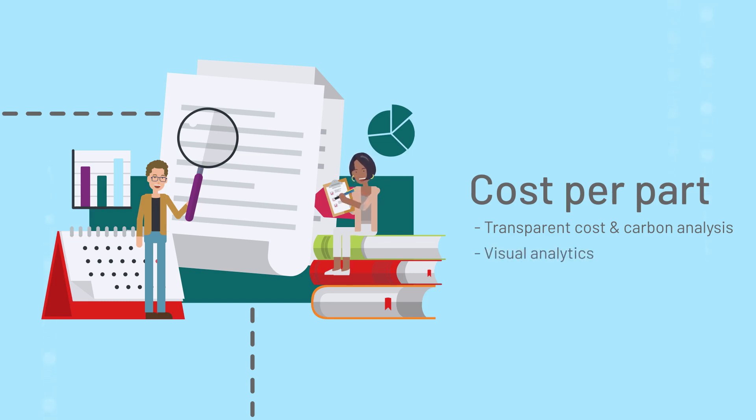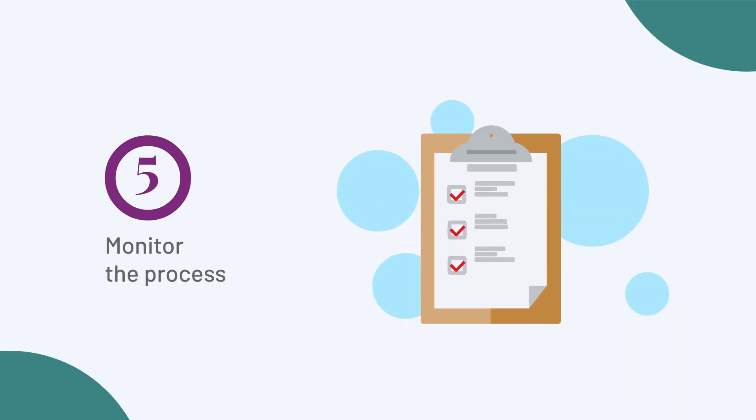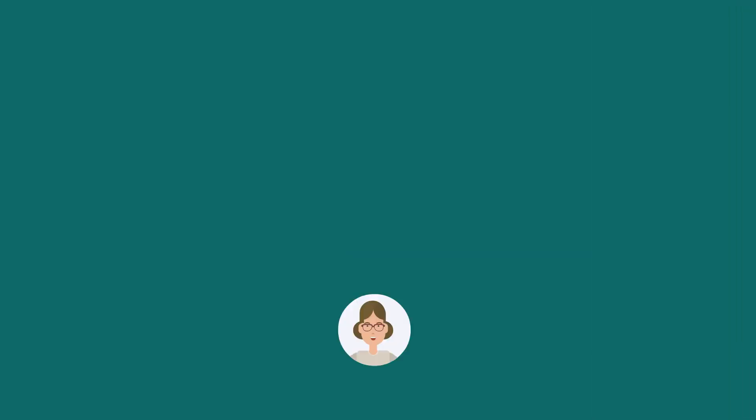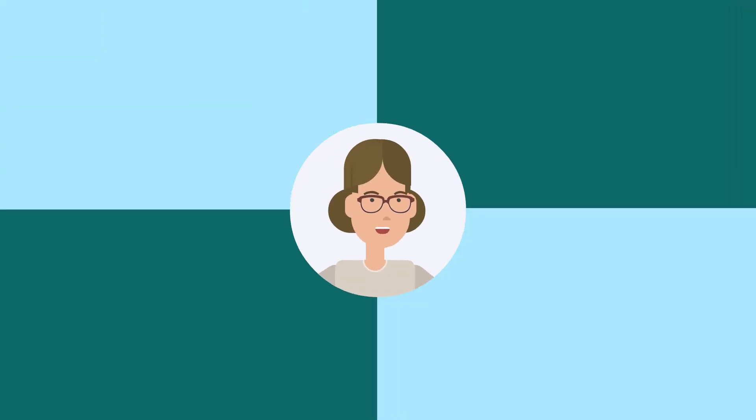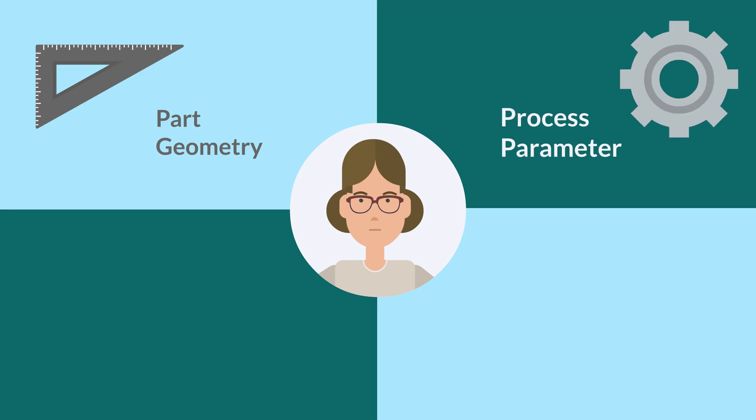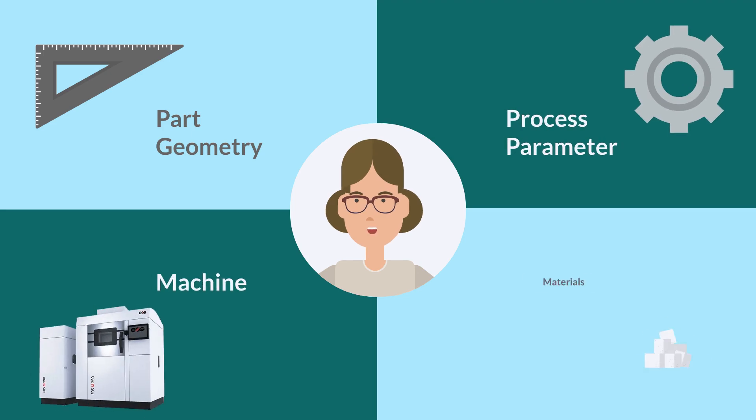Number five: monitor the process. Keep an eye on the process, collect data, analyze and connect. Performance of metal AM process depends on many factors such as part geometry, process parameters, machine, and materials.